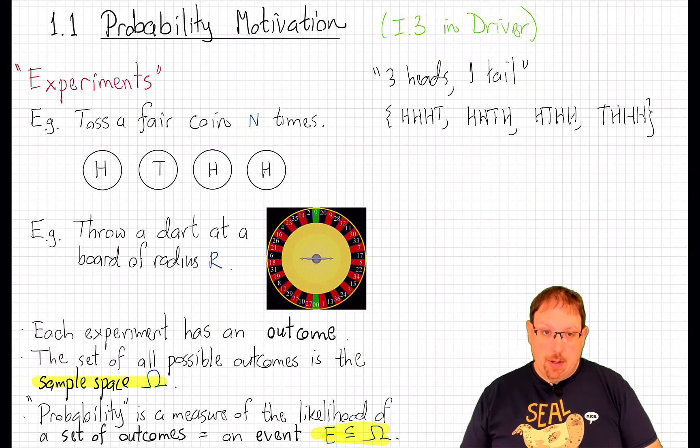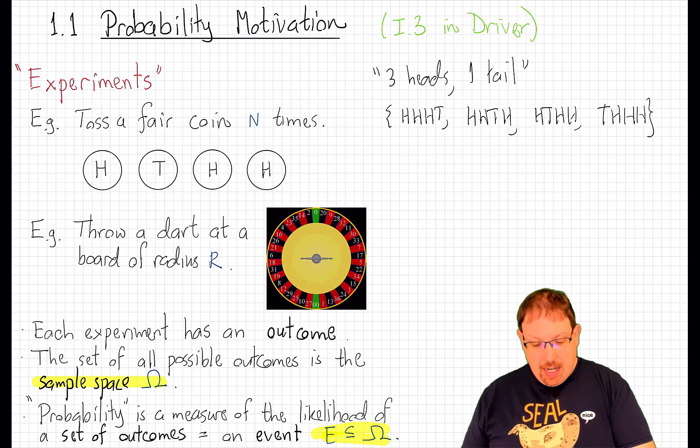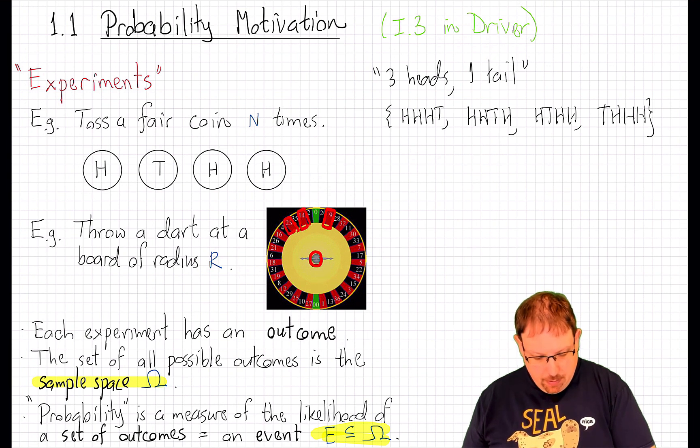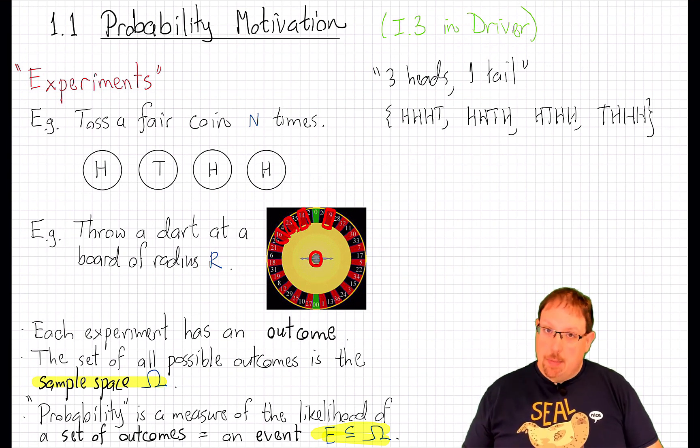Now thinking back to our motivating video from the Banach-Tarski paradox, if our sets, if our events, are pretty simple things, like a disk or a collection of rectangles, there's probably not going to be any issue.